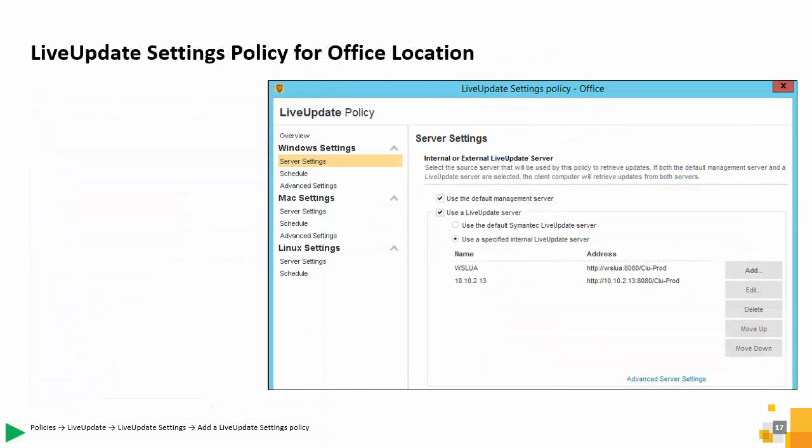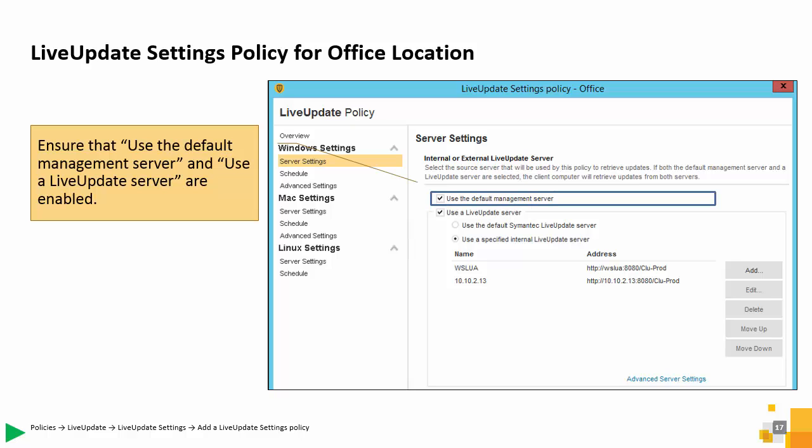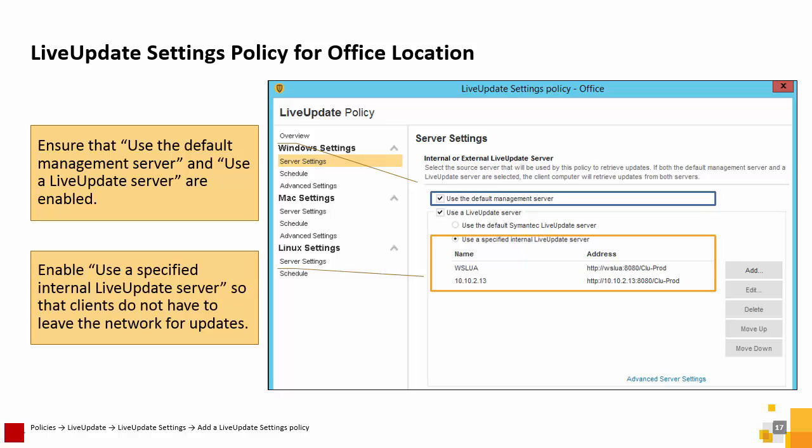For the office location, clients retrieve content from the default management server and an internal Live Updates server. The benefit of retrieving content from the SEPM and an internal Live Updates server is that client computers do not have to leave the network. Note that during a heartbeat, the client checks to see if new content is available on the management server. If it is, the client downloads content directly from the SEPM. Live Update checks the schedule settings to determine whether or not to run. By default, Live Update runs if content is older than two days or if the client disconnected from the SEPM for more than eight hours. If so, Live Update runs.